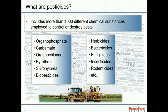Rodenticides are not always included in the target list, but in some circumstances they can contaminate food commodities during storage. More than 1,000 pesticides have been developed, and the detection, quantification and identification of large numbers of pesticides with such diversity of physical chemical properties is challenging and requires GC-MS techniques in addition to LC-MS.